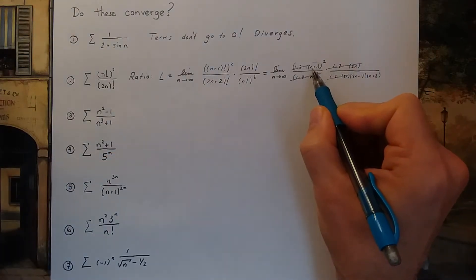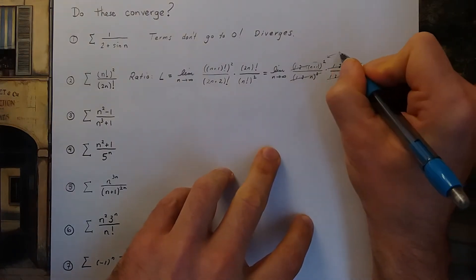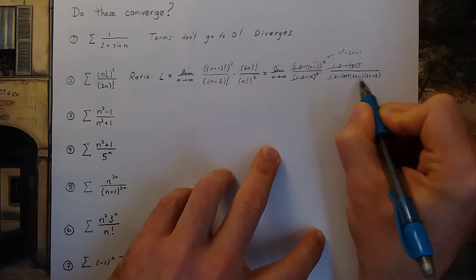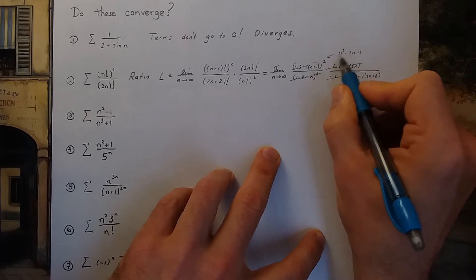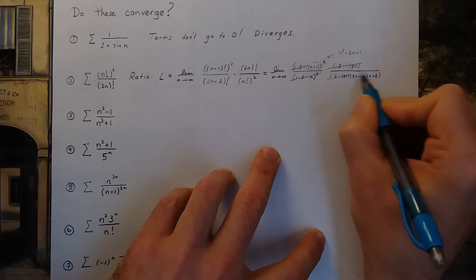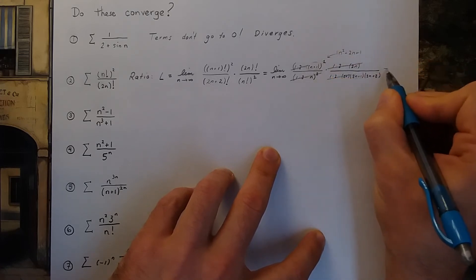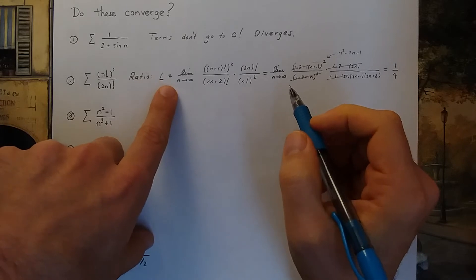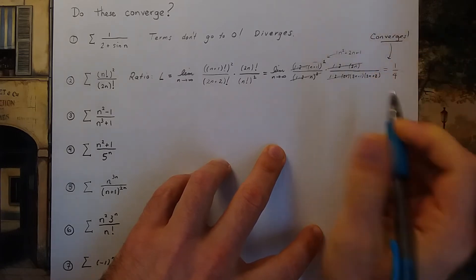The coefficient of n squared on the top is 1, so on top I have n squared plus 2n plus 1. If I expanded the bottom, the coefficient of n squared would be 4 — 2 times 2. So the limit is 1 over 4. Since I did the ratio test and got 1/4, which is less than 1, the series converges.